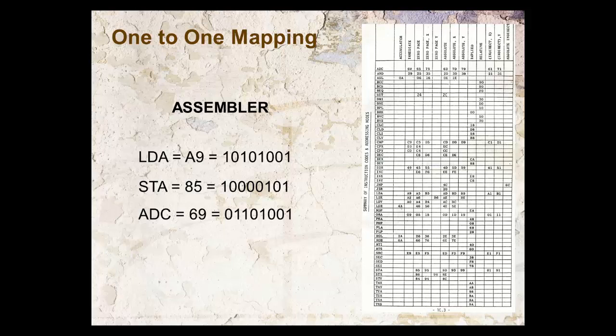That's adding — add with carry. That's the only add command the 6502 had, and it was always going to be in immediate mode 69. Assembler language has a one-to-one mapping to the hexadecimal, to the binary — there is no difference. The nice thing about assembler language is that LDA was the same command used for the Z80 as for the 6502. So I could now program the Z80 and the 6502 with the same code without worrying about the actual numbers. This was an absolutely massive leap forward.